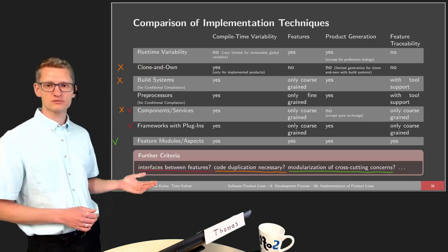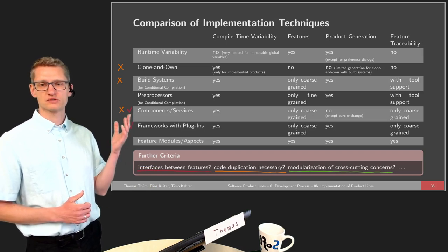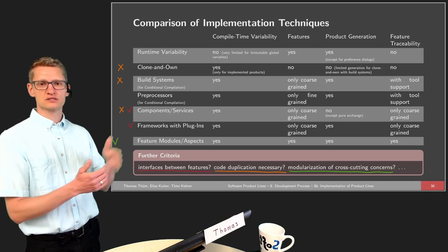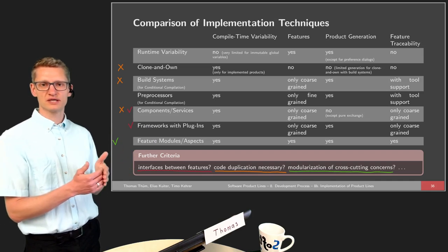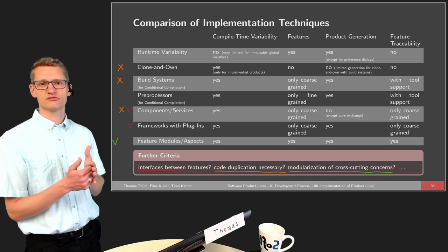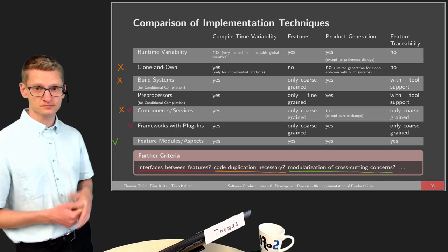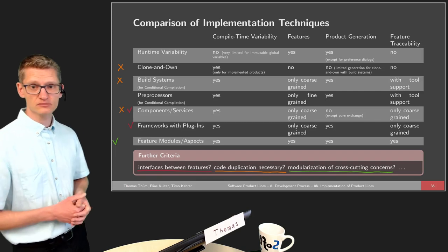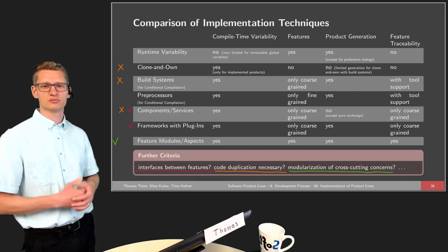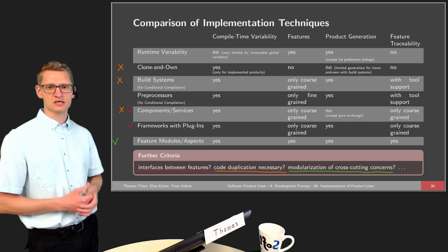When it comes to interfaces between features, we have those for components and services. Components have an API that someone is programming against, so we have a strict interface, but only for those coarse-grained features. The same for services, where we also have an API but in terms of a REST API or something like that.